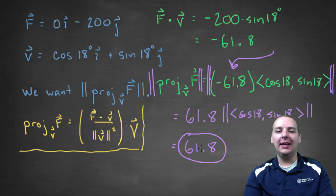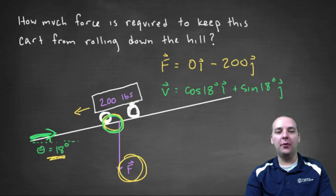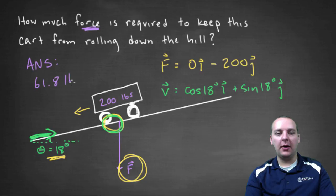That's the length, or the magnitude, that's the amount of force that this cart is pushing with going down the hill. Which means that's the amount of force we need to push back with to keep it stationary. So the answer would be 61.8 pounds of force.